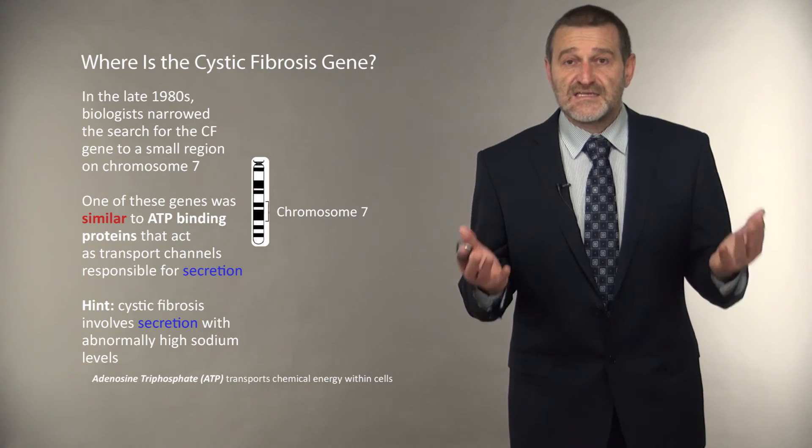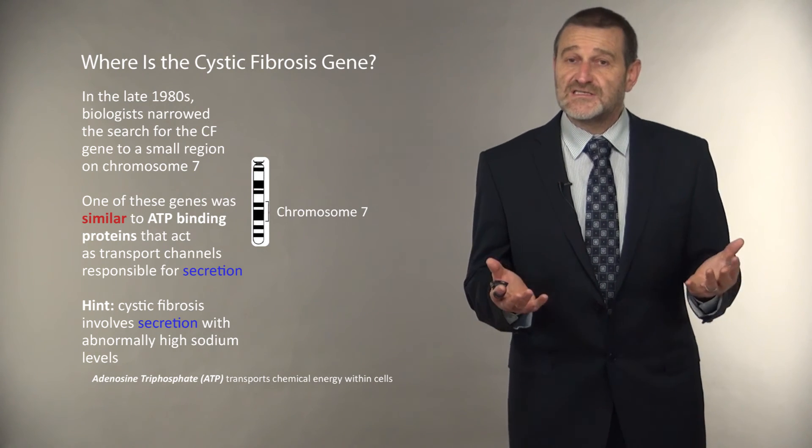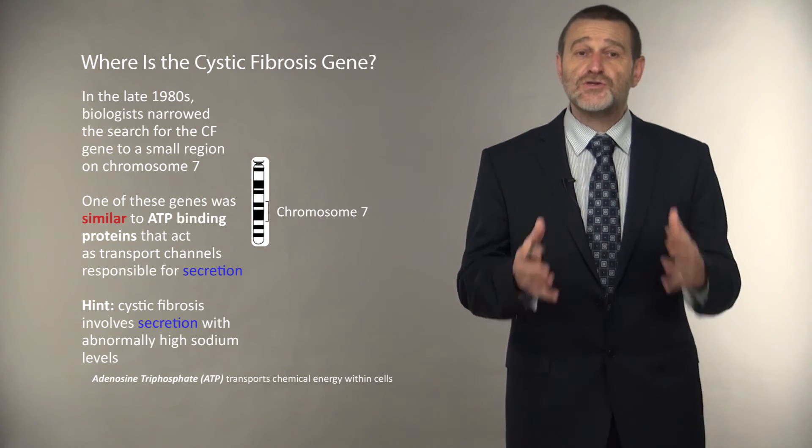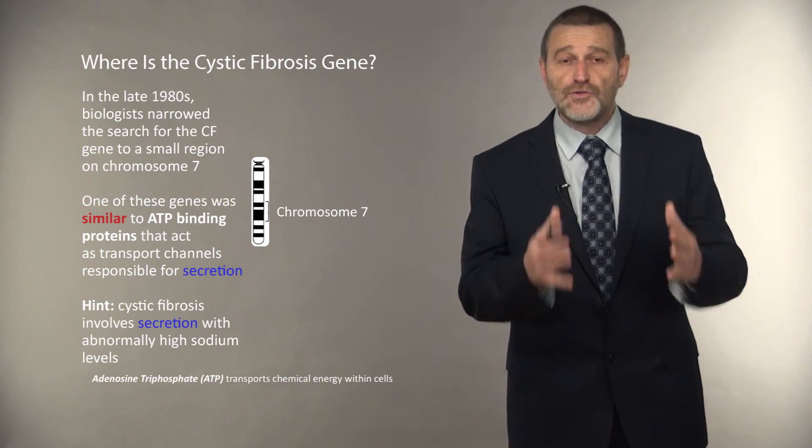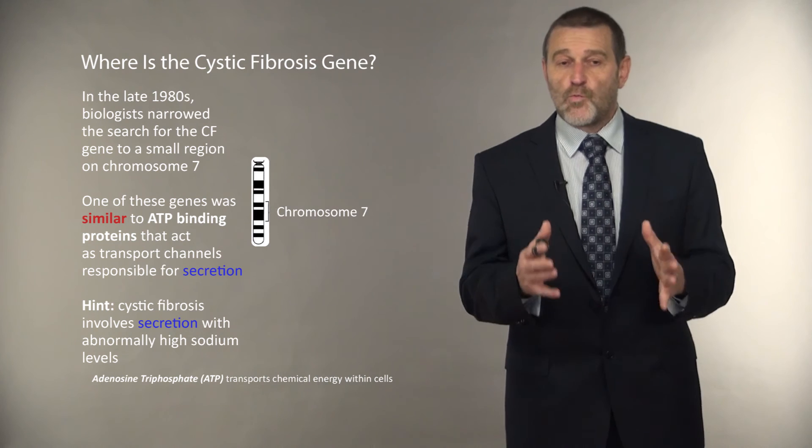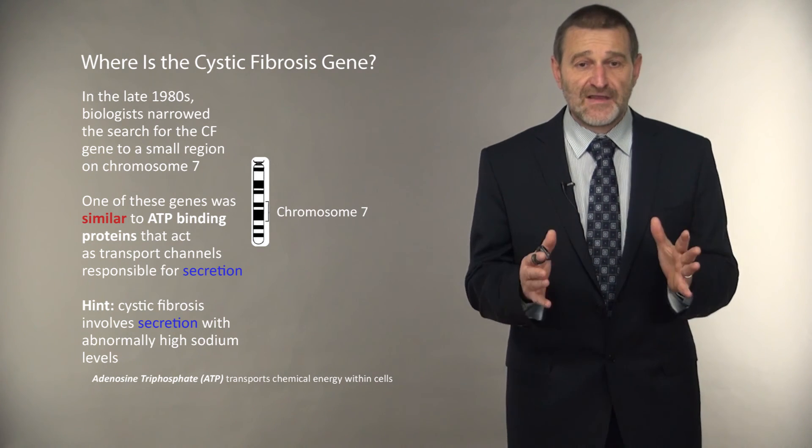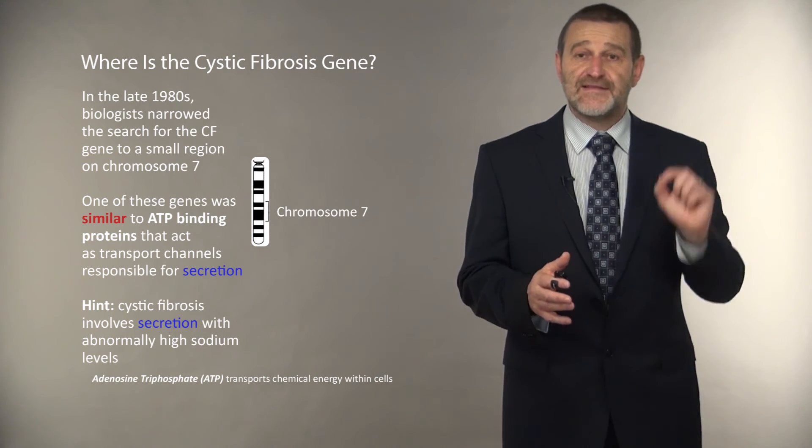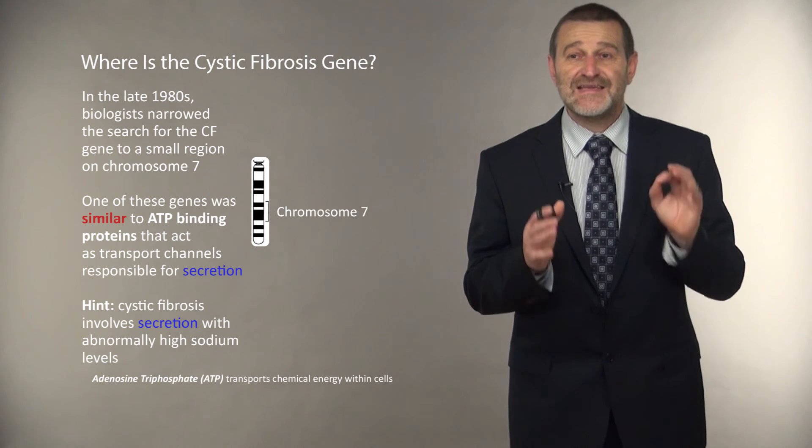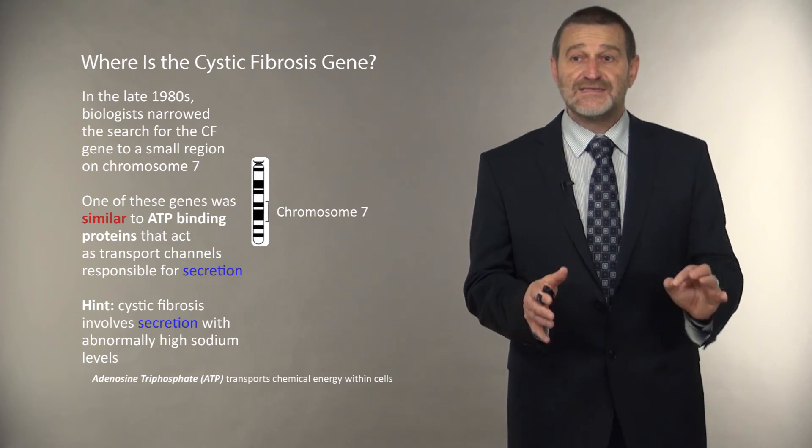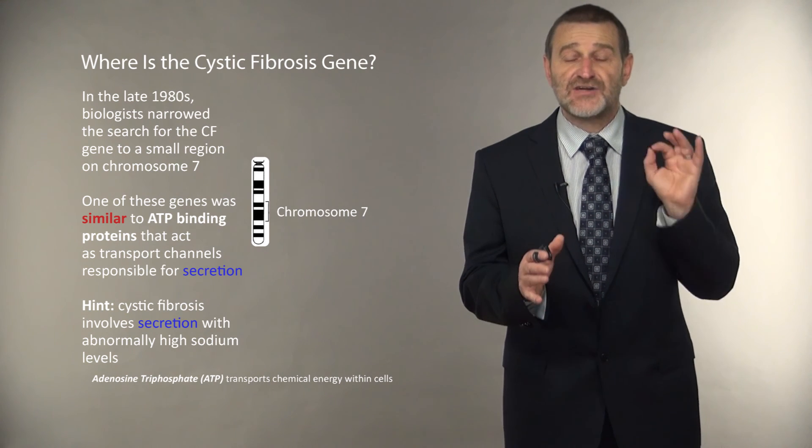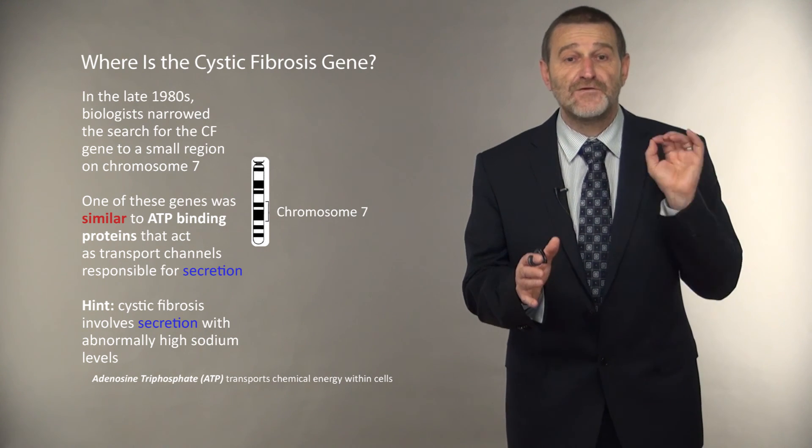As a result, they started to look at these genes and decided to compare each of the candidate genes in these narrow regions to all known genes at that time. One of these comparisons revealed that one of these candidate genes on chromosome 7 is similar to an ATP binding protein that acts as a transport channel responsible for secretion.